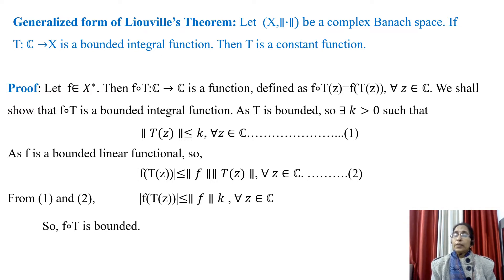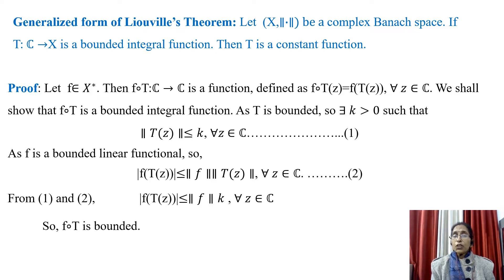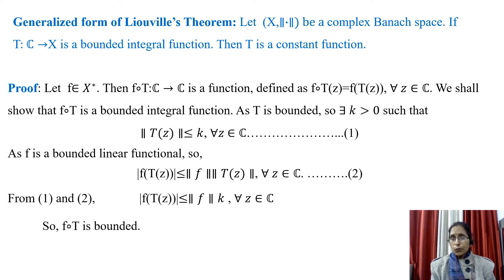To prove this theorem, let f belong to X*, that is, f is a function from X to the field of complex numbers, and it is bounded and linear. Then f∘T is a mapping from ℂ to ℂ, since f maps X to ℂ and T maps ℂ to X. So f∘T is defined as (f∘T)(z) = f(T(z)) for all z in ℂ. We shall show that f∘T is a bounded entire function.